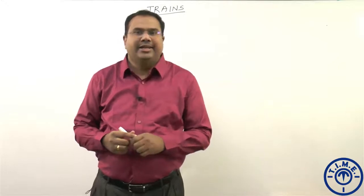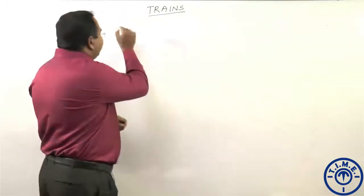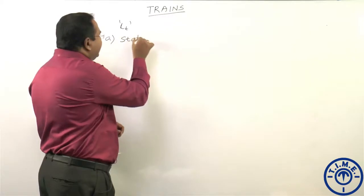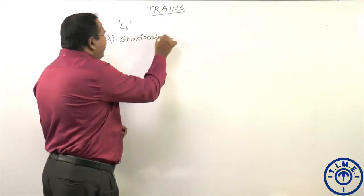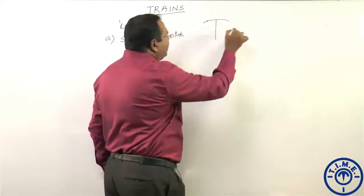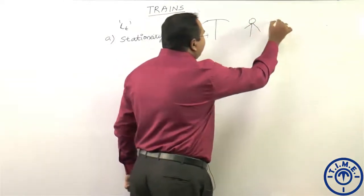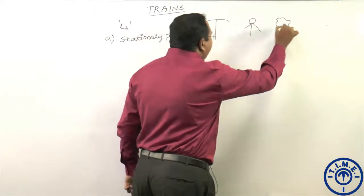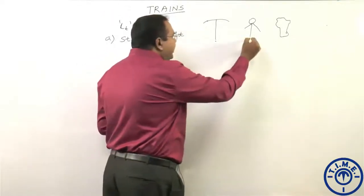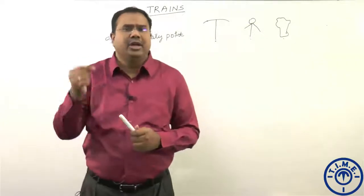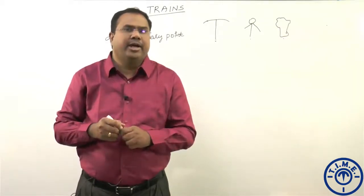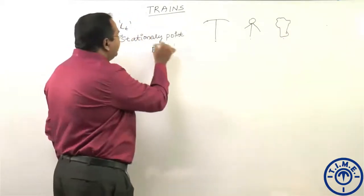The first case is a train of length Lt crossing a stationary point. A stationary point is an electric pole, telegraphic pole, a man, or a tree. All these come under stationary points because their distance is negligible — it is only a point. So when the train is crossing a stationary point, the distance covered is equal to the length of the train.